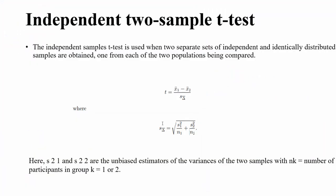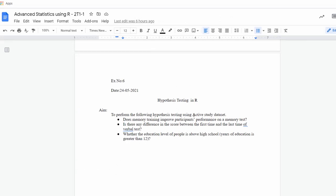Whenever we want to compare the means of two different groups, we use the independent two-sample t-test. The test statistic is t = (x̄1 minus x̄2) divided by s_delta, where s_delta = sqrt(s1² / n1 + s2² / n2), and s1², s2² are unbiased estimators of variances of the two samples, and n_k is the number of participants in group k. Now let's perform hypothesis testing on a sample dataset named active.csv.